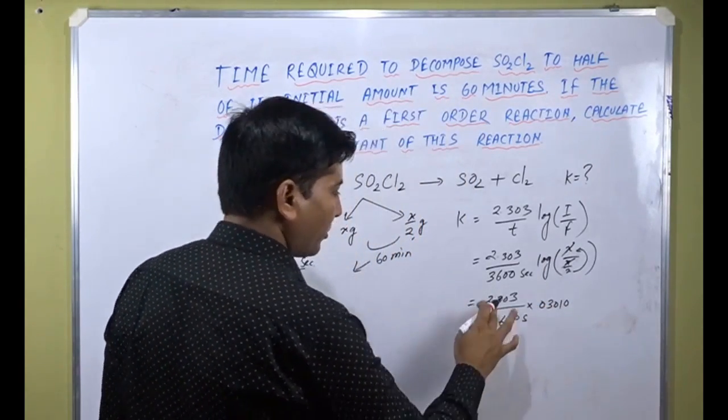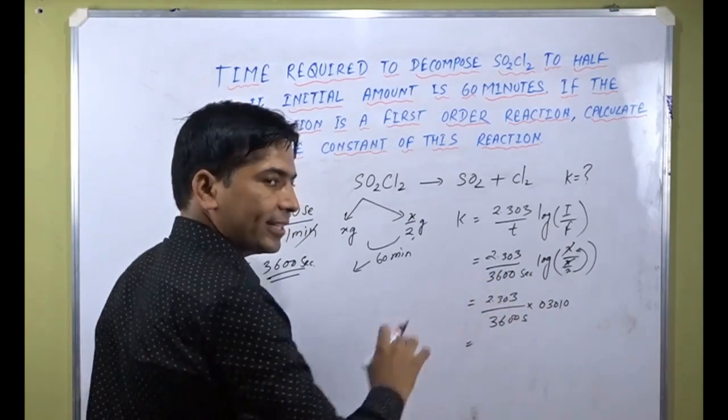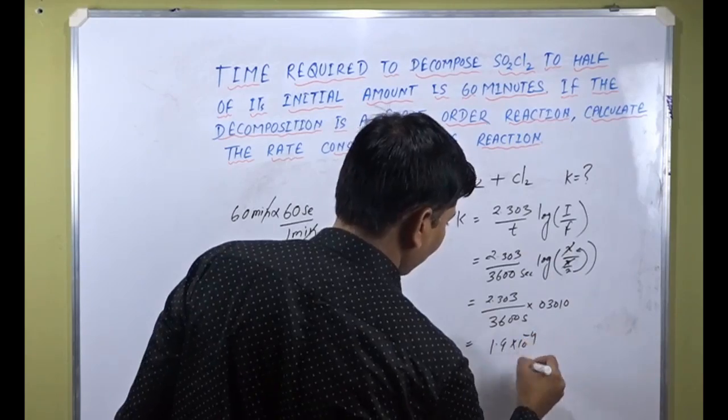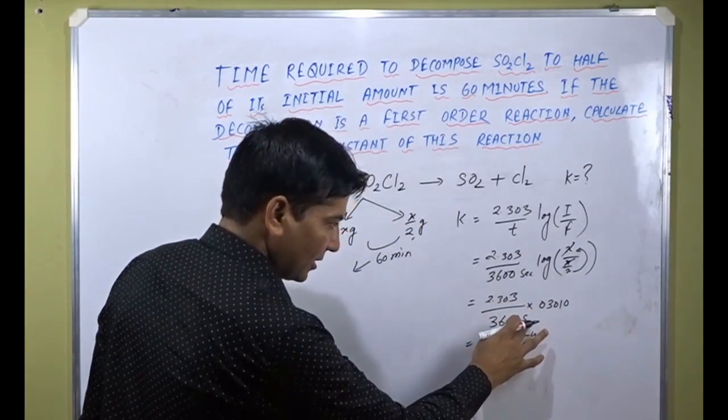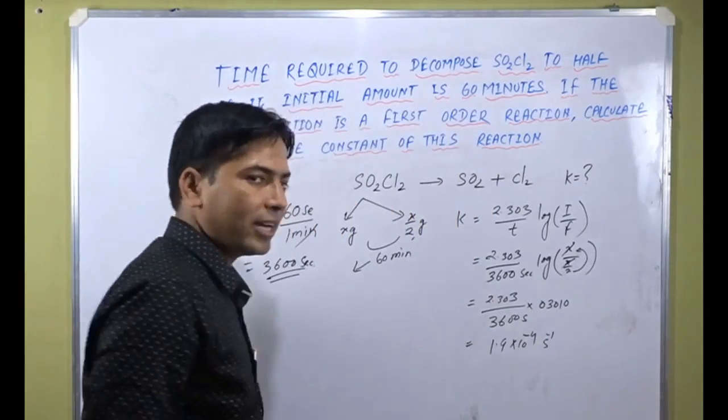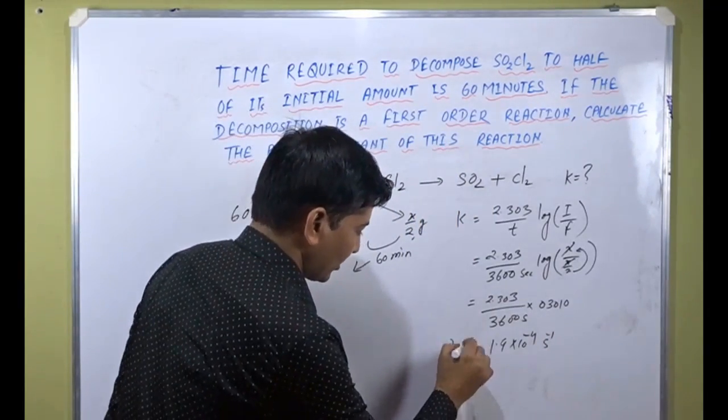When you multiply the top values and divide by 3600, you will get 1.9 multiplied by 10 to the power minus 4. Since this unit is given per second, it can be written as 10 to the power minus 1 per second. This is the rate constant.